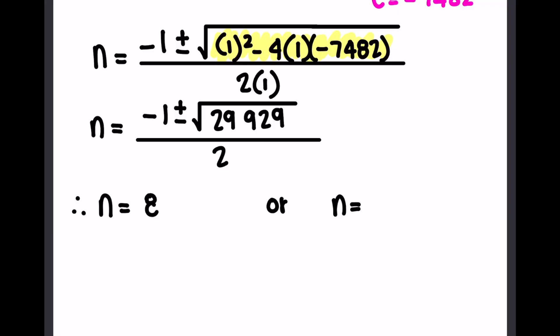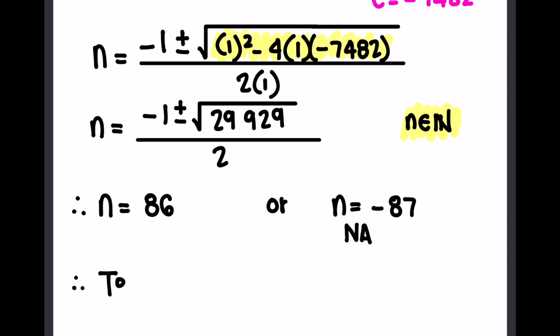The two answers are 86 and negative 87. Remember, n must be an element of the natural number system, so we eliminate negative 87 as it is not applicable. Therefore term 86 equals negative 7,479. I do hope that you've enjoyed this video and that it's helped you. See you soon.